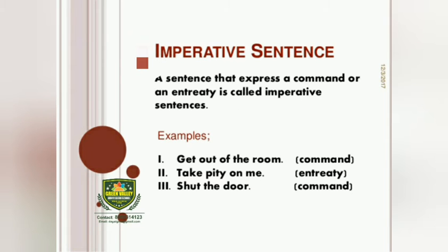The third type is the imperative sentence. A sentence that expresses a command or an entreaty is called an imperative sentence. Examples: Get out of the room — it is a command. Take pity on me — it is an entreaty. And shut the door — it is also a command.